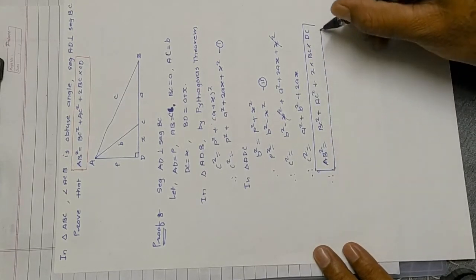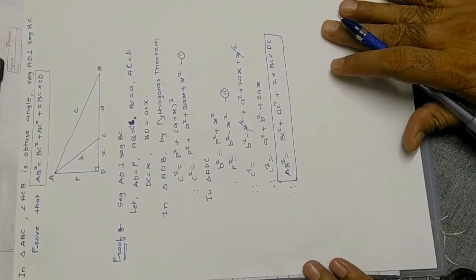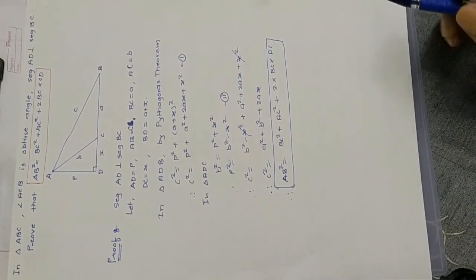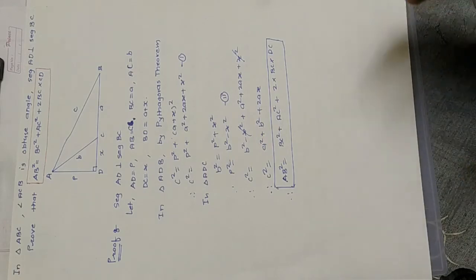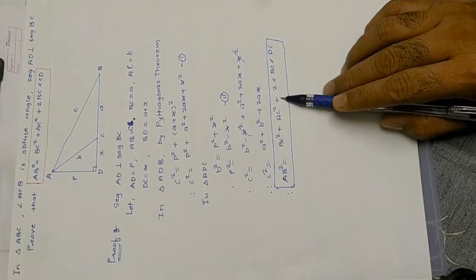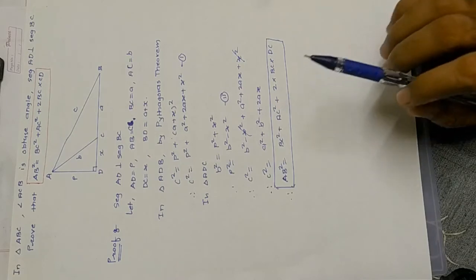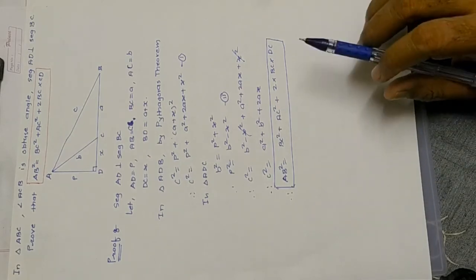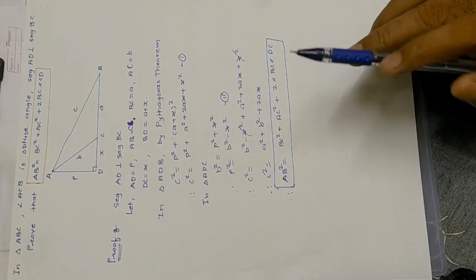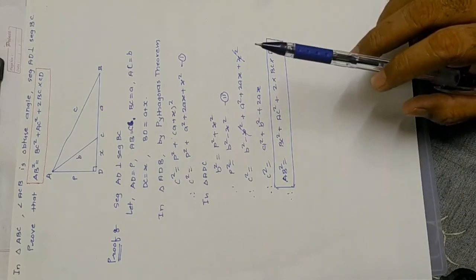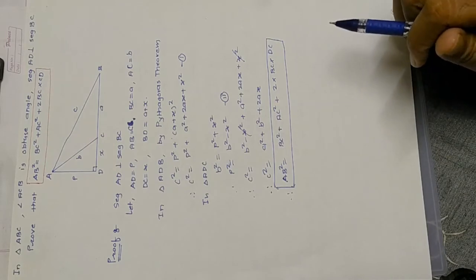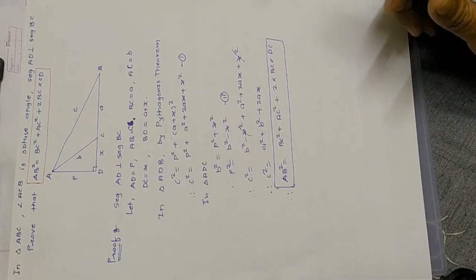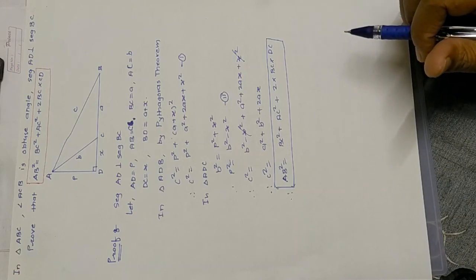This may come in the exam as an activity or as a three-mark proof. The only difference between the acute and obtuse angle results is plus versus minus: acute gives −2·BC·DC, while obtuse gives +2·BC·DC. Remember this well, because these properties will be used in the next theorem — the Apollonius theorem.